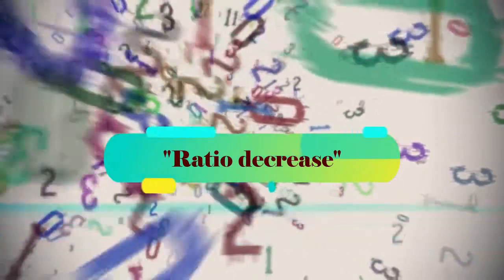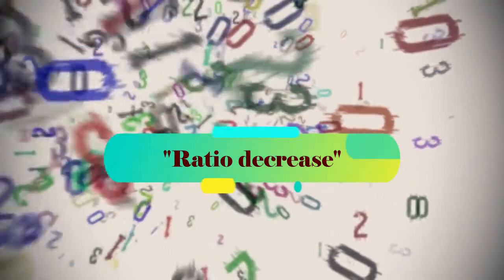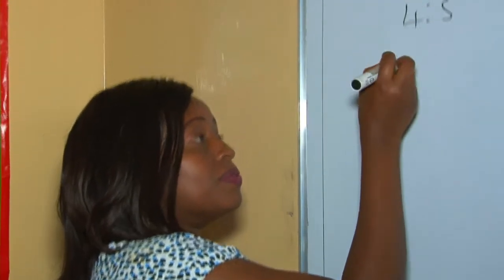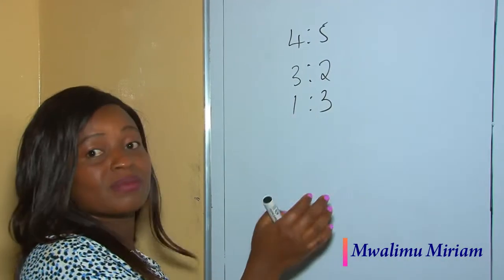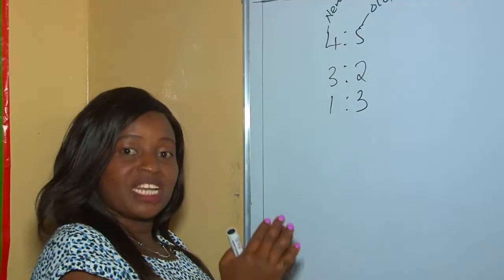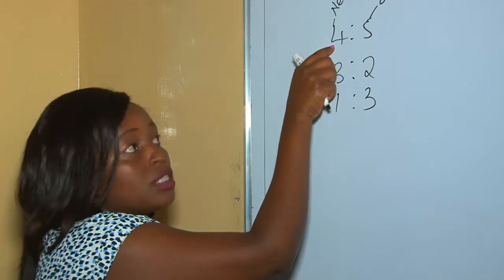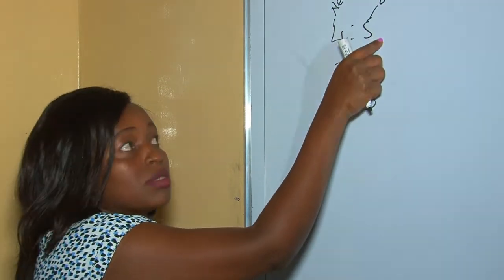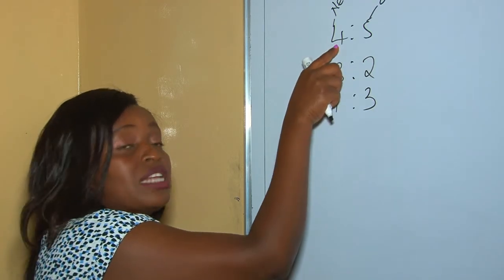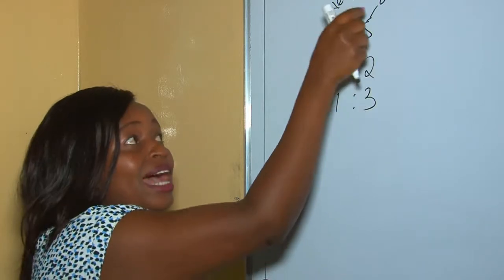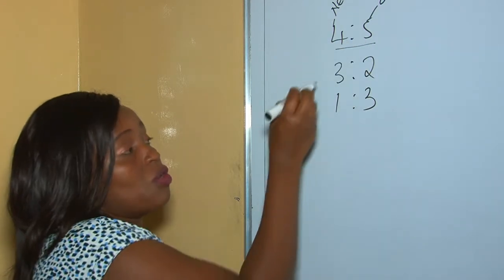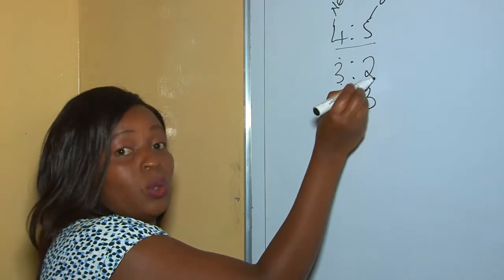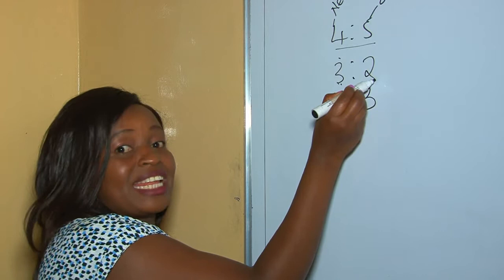Welcome once again to my YouTube channel. Today's lesson is about ratio decrease. What is a ratio decrease? Let's say we are given ratios like 4 is to 5, 3 is to 2, and 1 is to 3. With a ratio decrease, the current number is the smaller number and the original one is the bigger number. So 4 being our current is the decreased number and the original is higher. If the current is bigger than the old one, that is a ratio increase.